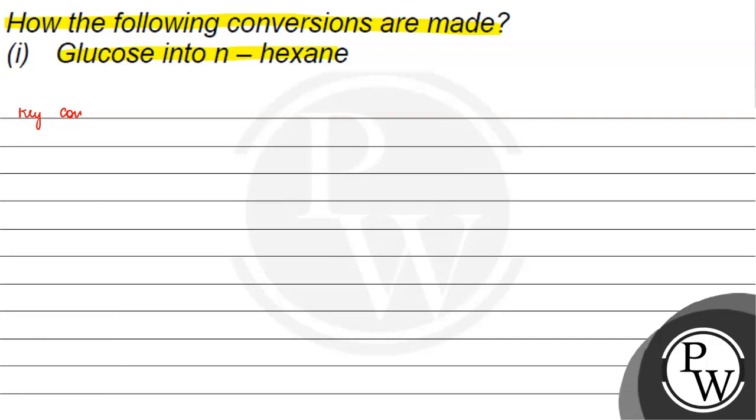Key concept. The key concept is reactions of glucose. The conversion given to us is glucose into n-hexane.